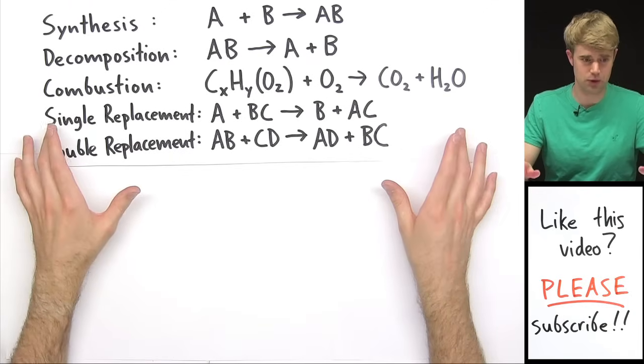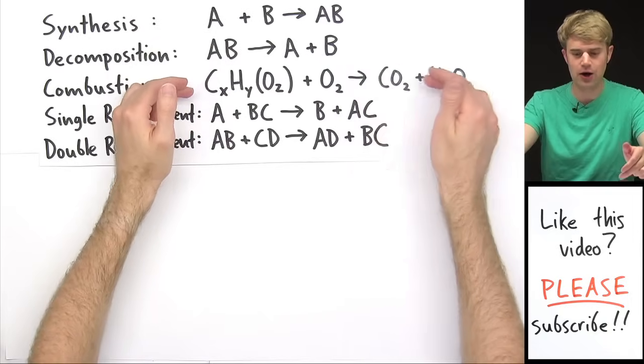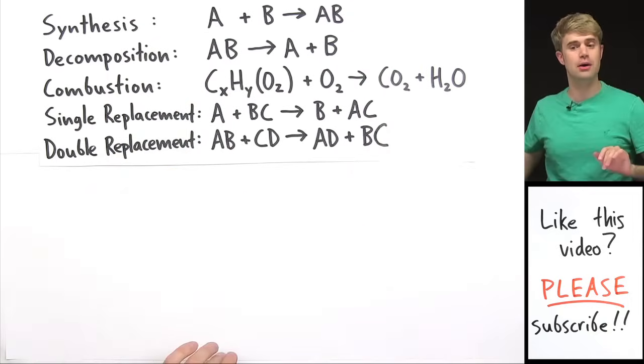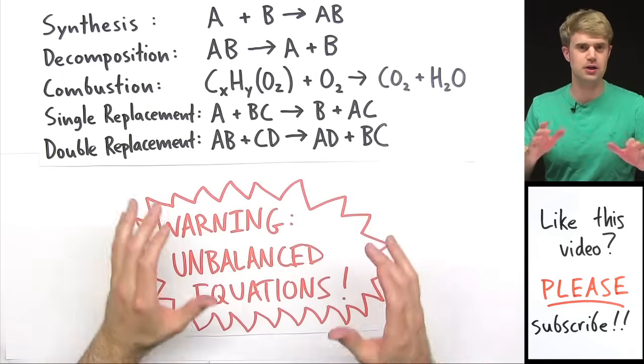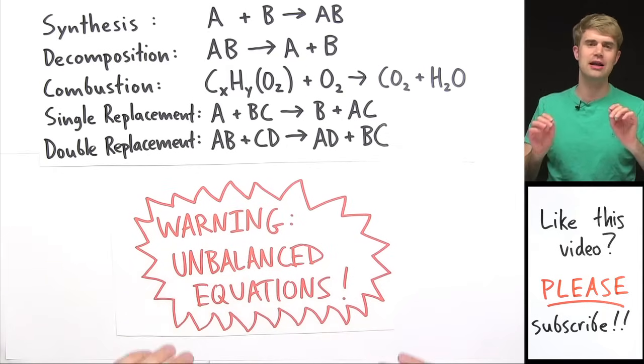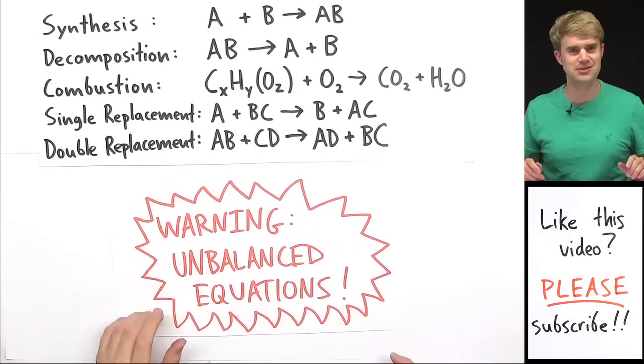So here are the five major types of chemical reactions. For each, I've written a sort of general, generic example equation that shows what the reaction looks like. Just a heads up, the equations that we'll be using in this lesson are unbalanced because for right now, I just want you to focus on the elements and how they're rearranging and I don't want you to worry about getting distracted by the coefficients. So let's start classifying reactions.